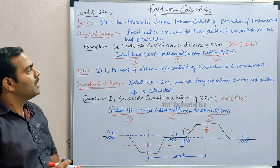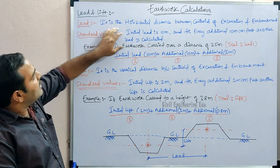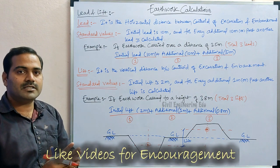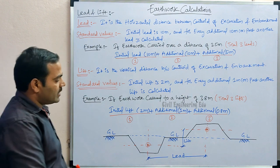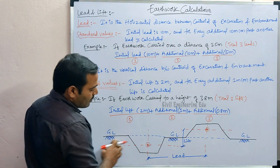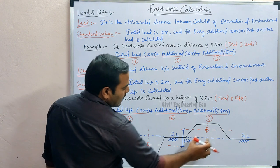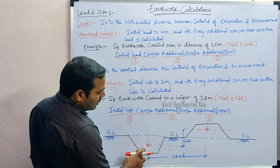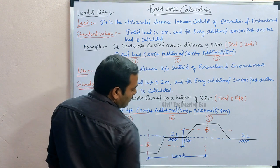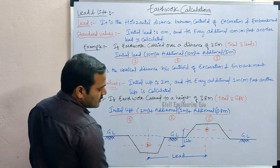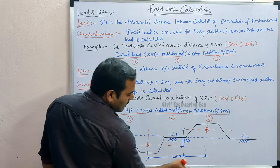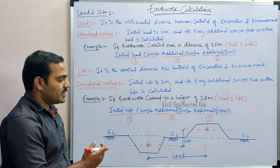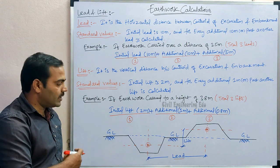Now let us understand what is lead. Lead is the horizontal distance between the centroid of excavation and the centroid of embankment. If you observe this figure, this is the ground level; earthwork done below ground level and above ground level are shown. We draw vertical lines at the centroids of each, and the horizontal distance measured between these two centroids is called lead.